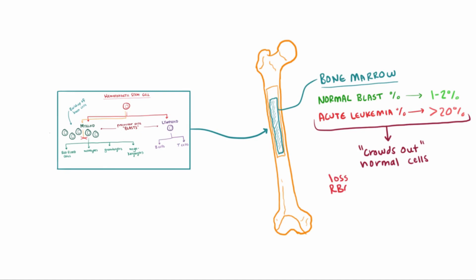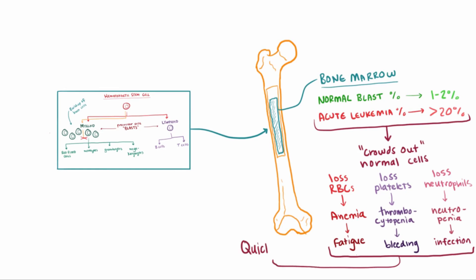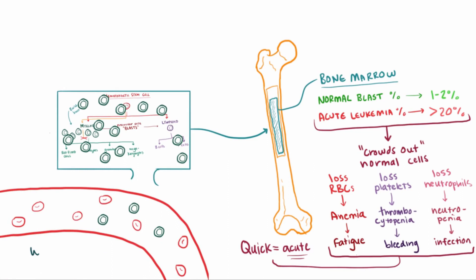If you had a loss of red blood cells, you'd develop anemia, where you might have symptoms of fatigue. Or maybe you're missing platelets, so you get thrombocytopenia and have problems with bleeding. Or neutrophils and neutropenia and start getting more infections. Usually symptoms like this can come about relatively quickly, which is why we say that it's acute leukemia. Eventually, these blasts build up to a point where they start to spill out into the bloodstream, which typically causes your white blood cell count to go up.